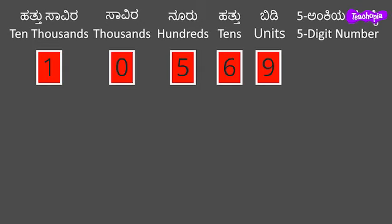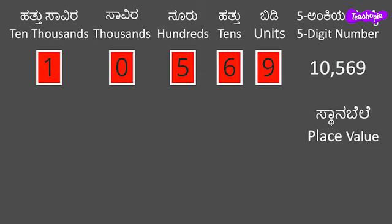Here we have digits 1, 0, 5, 6 and 9 in the ten thousands place, thousands place, hundreds place, tens place and units place. We can write the number as 10,569 and place a comma to the right of the thousands place as shown for easy reading of the number. The number is read as 10,569. Let us find the place value of the digits in the number. The place value of the digit 9 in the units place will be 9. The digit in the tens place is 6 and its place value will be 60, as it represents 6 groups of 10 objects.